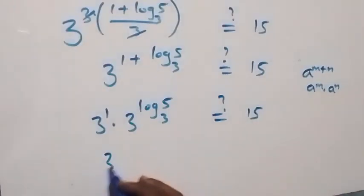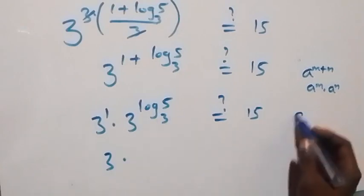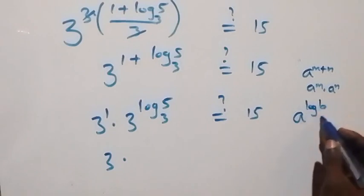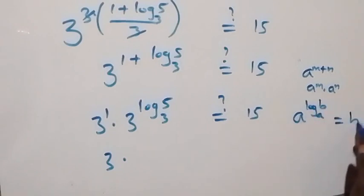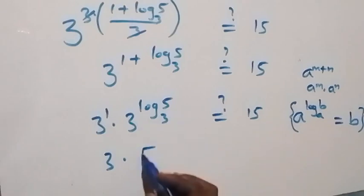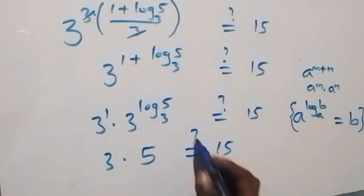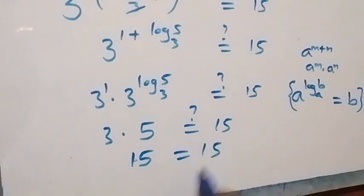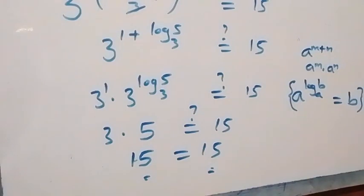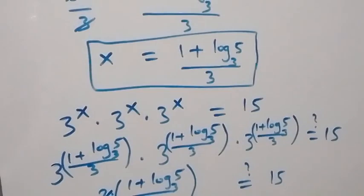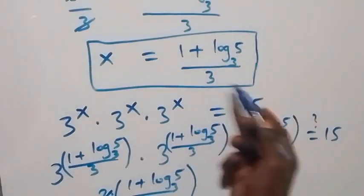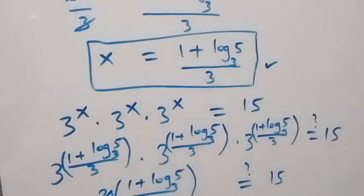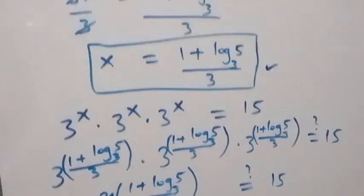Here, 3 raised to power 1 is 3. Applying the identity a raised to power log base a of b equals b, we get 3 times 5, which equals 15 on this side. So the left hand side equals the right hand side, and we can conclude that x equals (1 plus log base 3 of 5) over 3 satisfies the given problem.